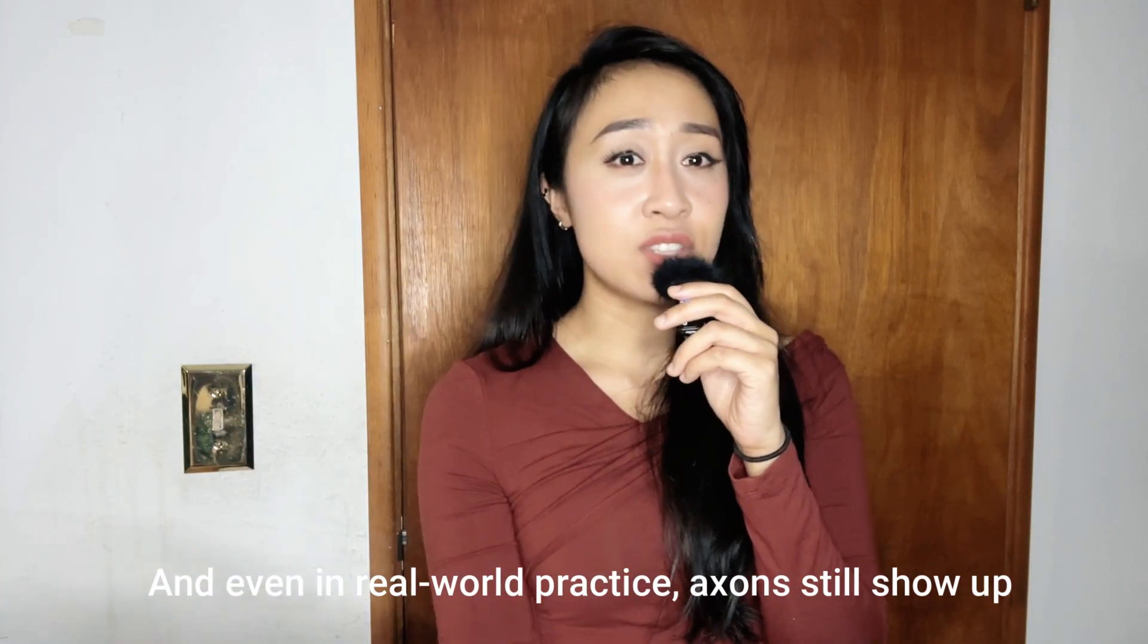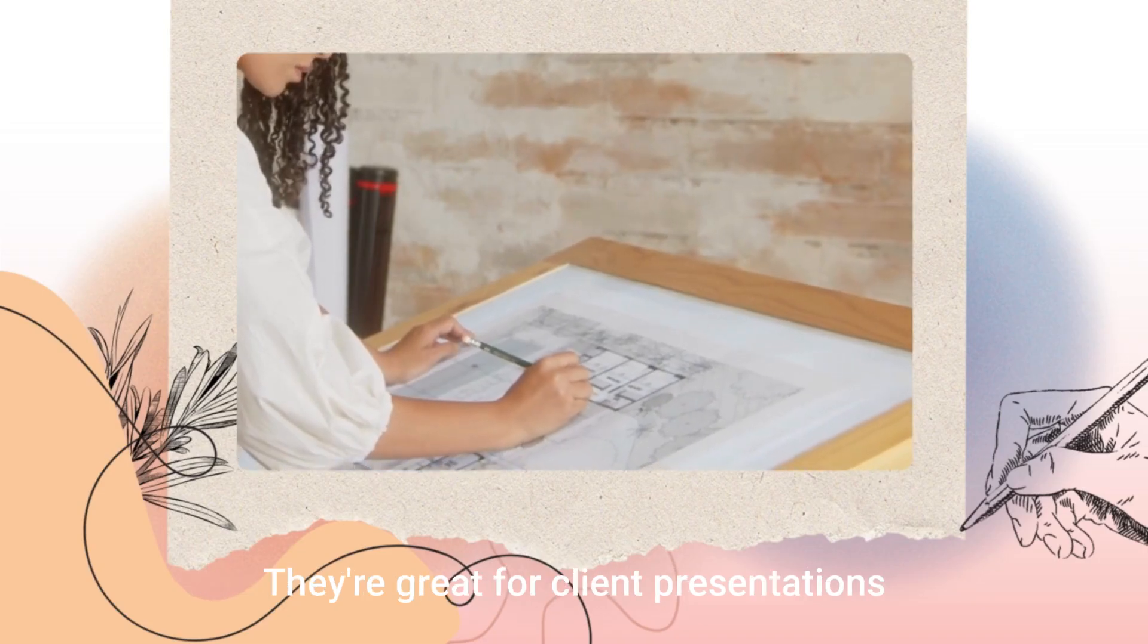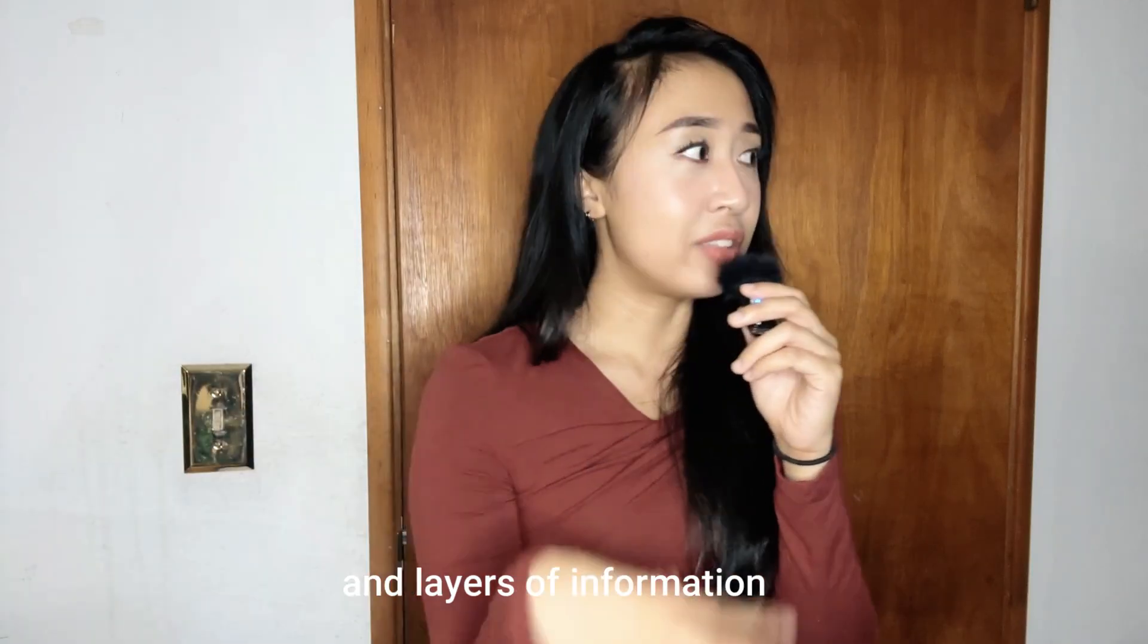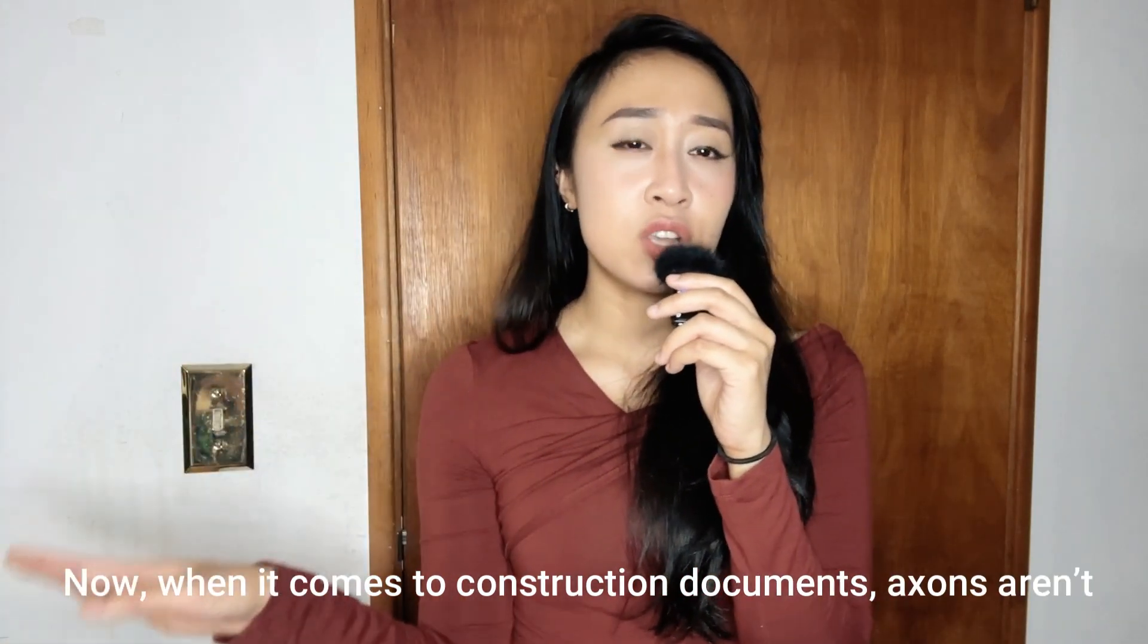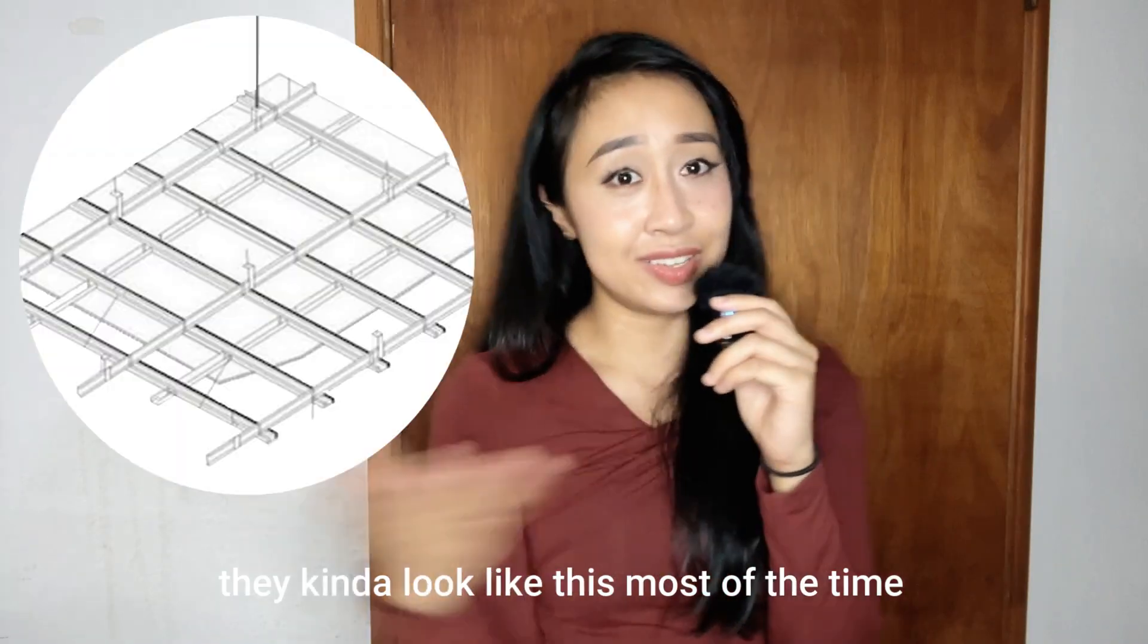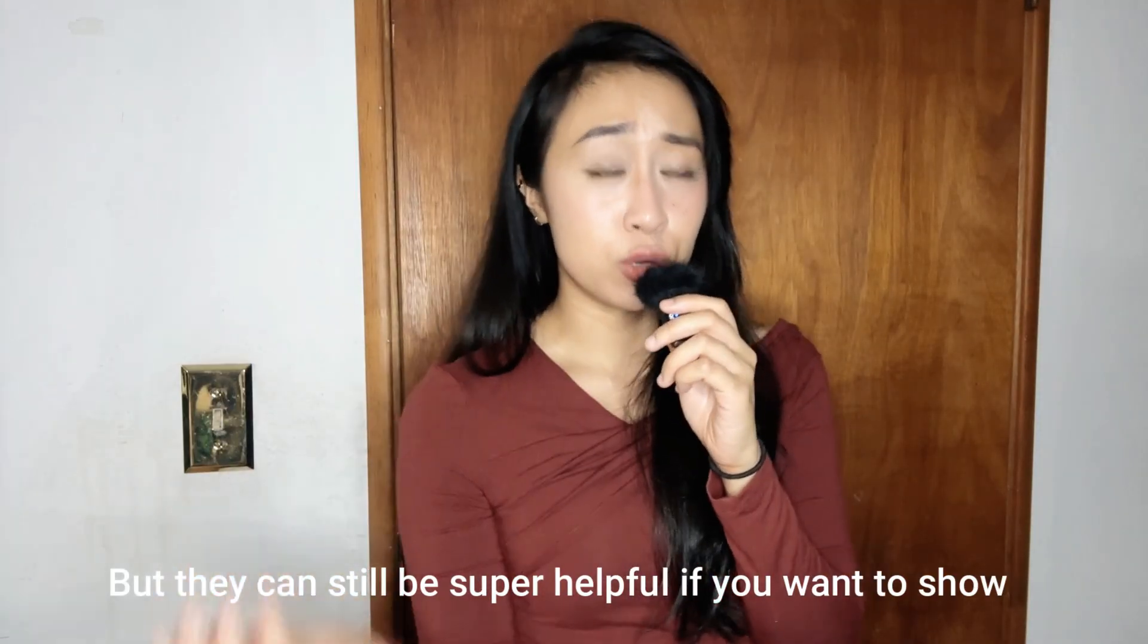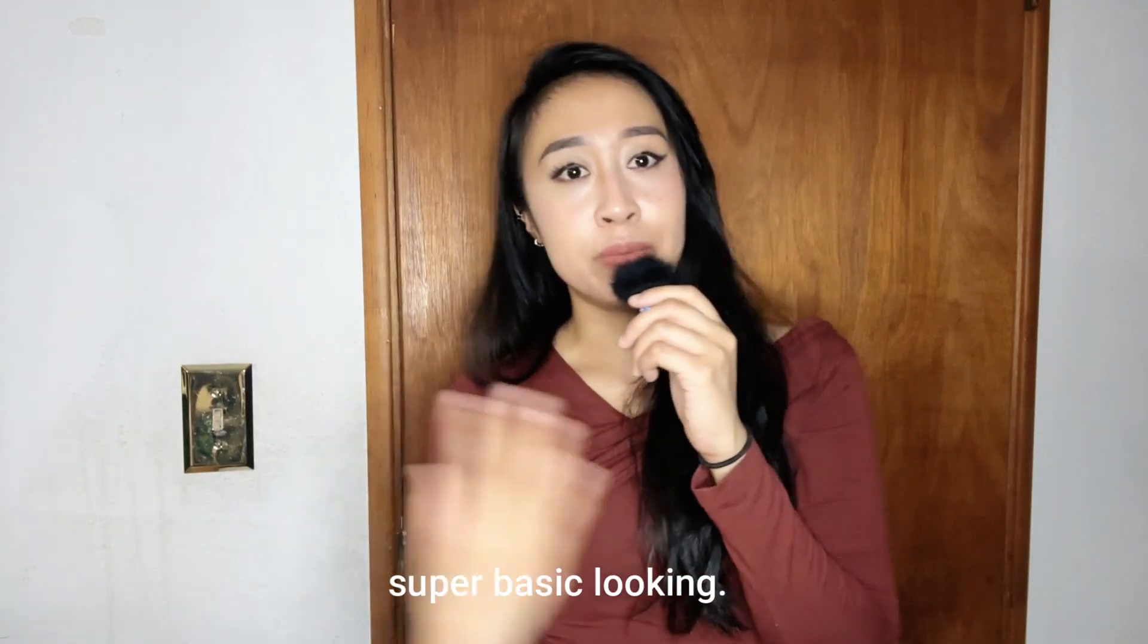And even in real-world practice, axons still show up, particularly in the conceptual phases of a project. They're great for client presentations, especially when you want to add a bit of color and layers of information. Now when it comes to construction documents, axons aren't usually graphically detailed as what you see here. They kind of look like this most of the time, but they can still be super helpful if you want to show a ceiling grid or a special detail, and it's usually super basic looking.